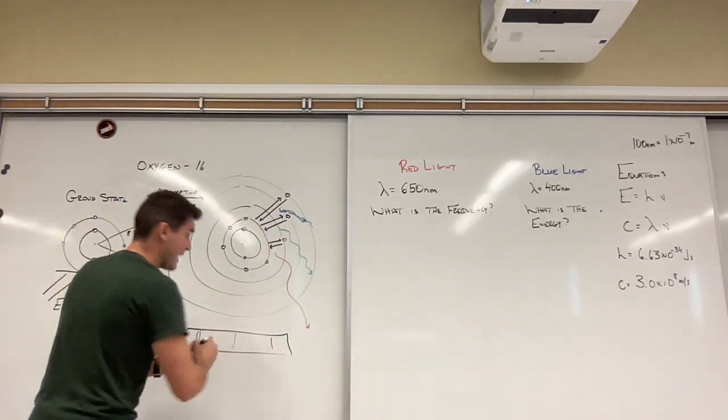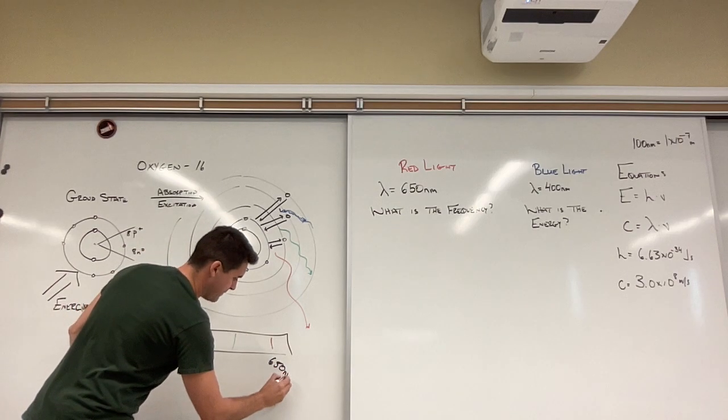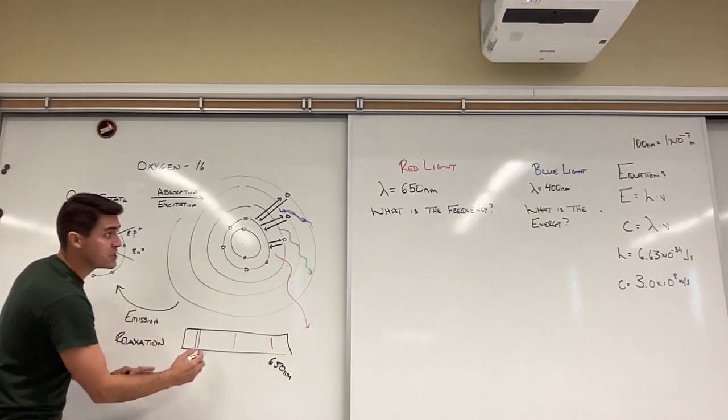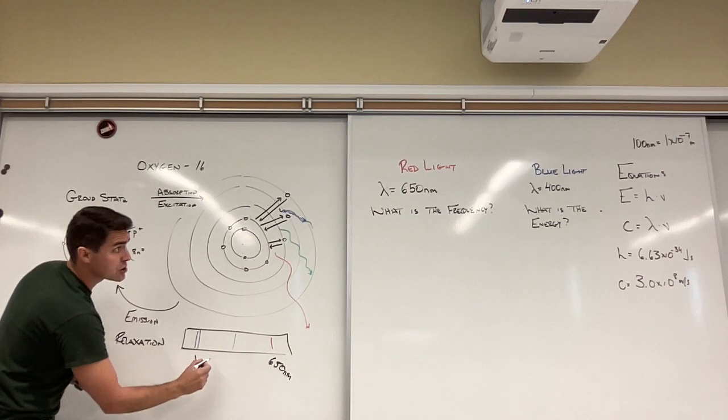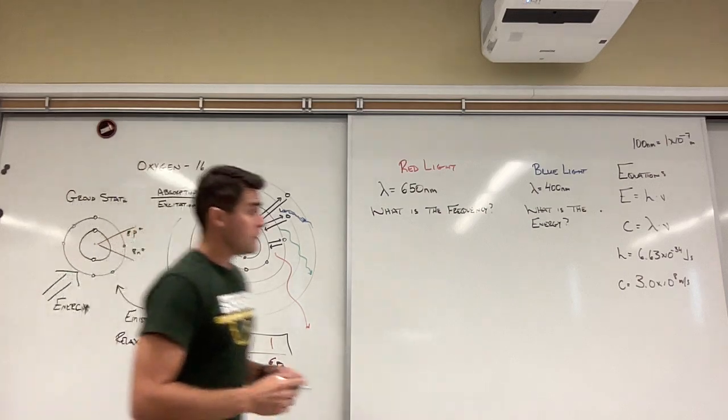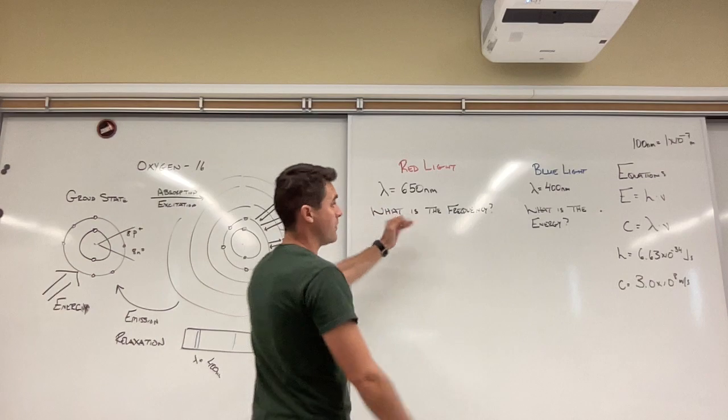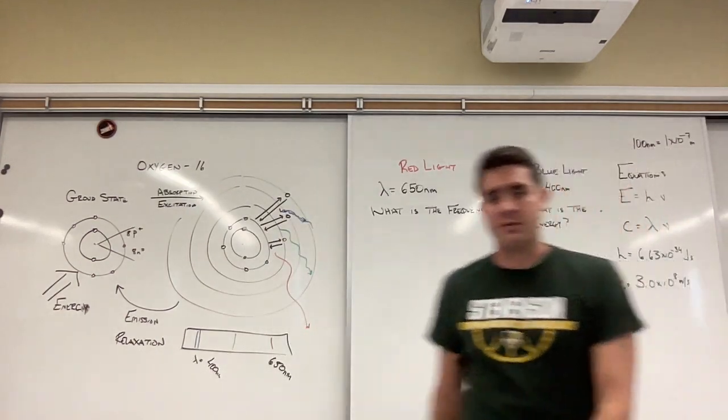So I went ahead and I looked at these and I said this wavelength of red light is actually 650 nanometers and one of these blue lights wavelength is equal to 400 nanometers. And so I want to figure out two things. Number one, I want to figure out what is the frequency of red light being emitted and what is the energy of the blue light being emitted?